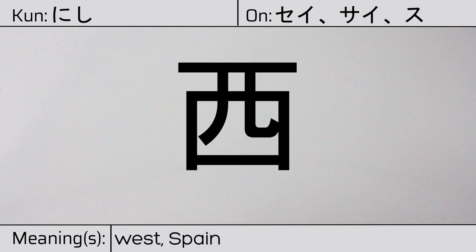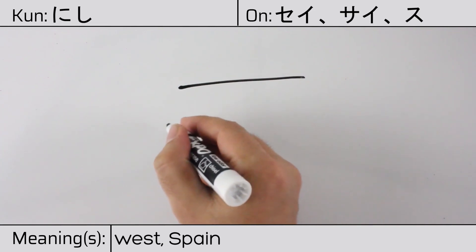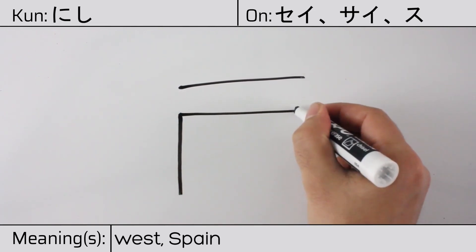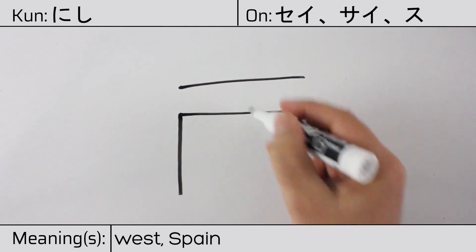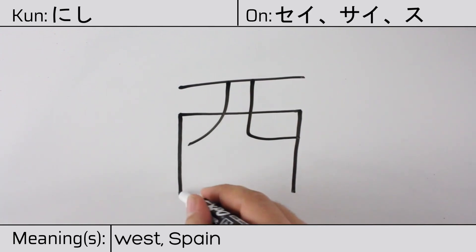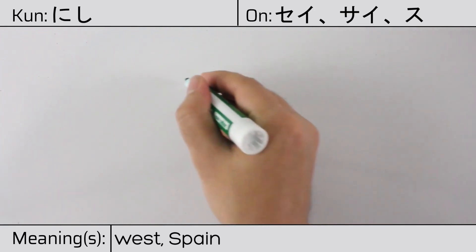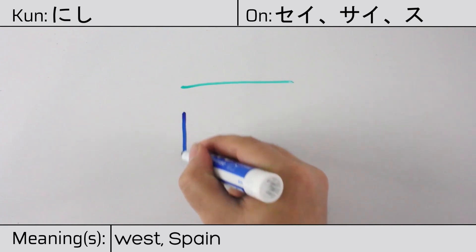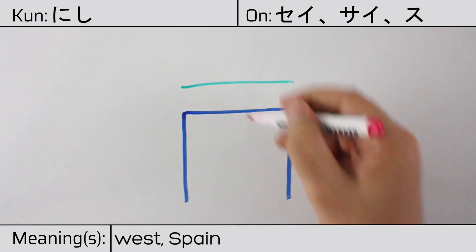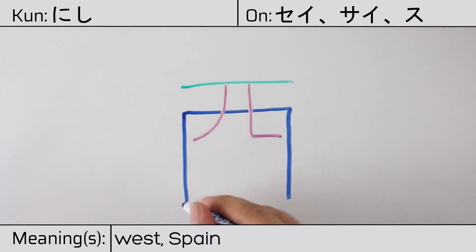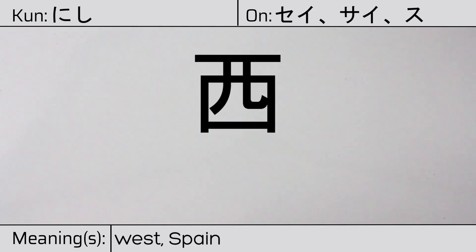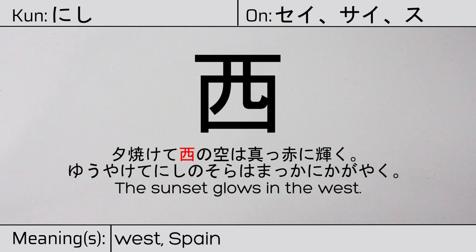Here is the stroke order. This character is made up of the following radicals or parts: kanji ichi, kuchi or mouth, and hitoashi or the human leg radical. You can remember this kanji by the following hint: a dissident speaking on a podium in the west. Our example sentence is: yūyakete nishi no sora wa makka ni kagayaku — The sunset glows in the west.